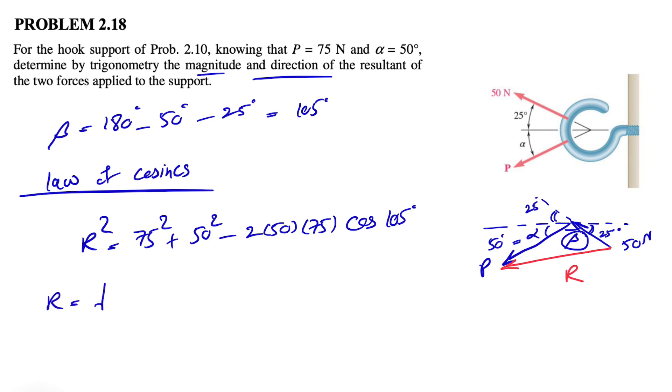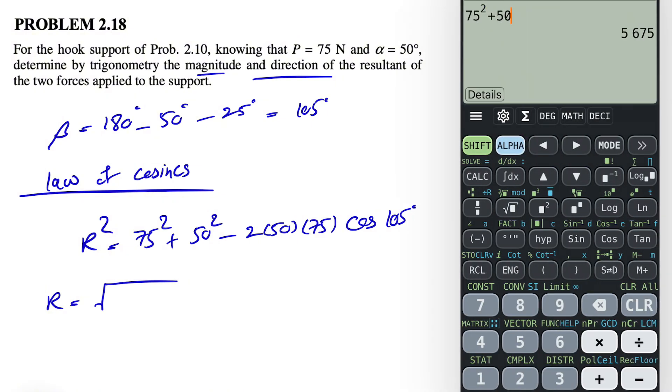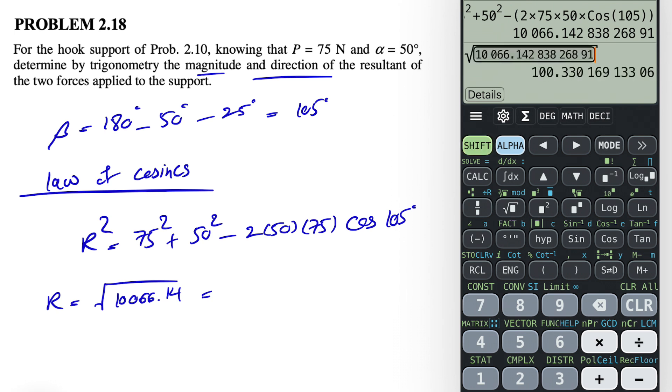Basically, R would be the square root of what we have in the previous step. Let's find that out. So 75 squared plus 50 squared minus 2 times 75 times 50 times cosine of 105. That's going to be 10,066.14. And we have the square root of that answer, which is going to be 100.33 Newtons.